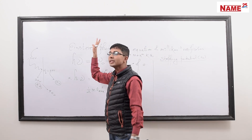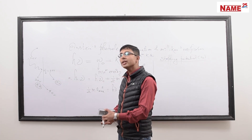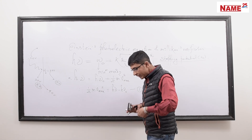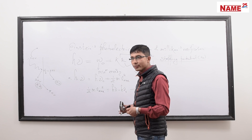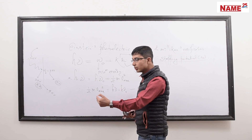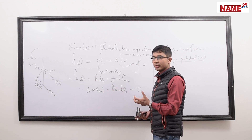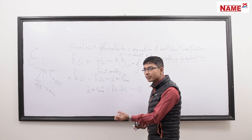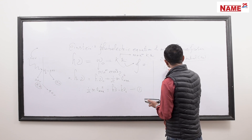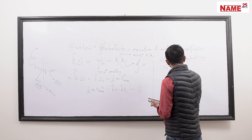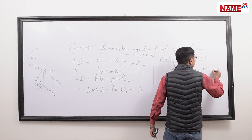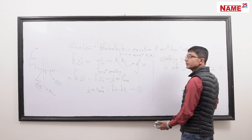If a photon falls on the surface, its energy is absorbed by the electron. If the electron has overcome the work function, it gains kinetic energy. When we apply a retarding potential, the electron's kinetic energy is converted to potential energy. Therefore, eVs = ½mv²max. This is equation number 2, where eVs is the potential energy experienced by the electron due to the applied stopping potential.